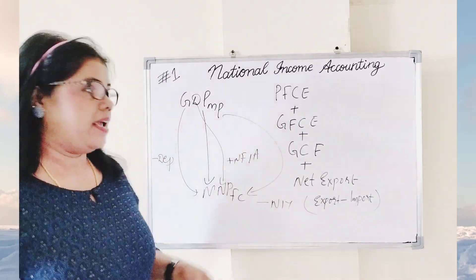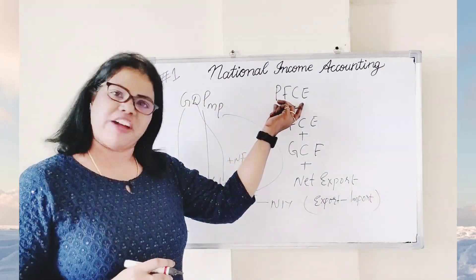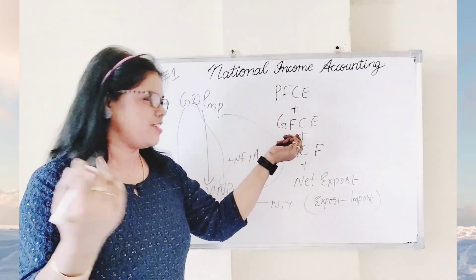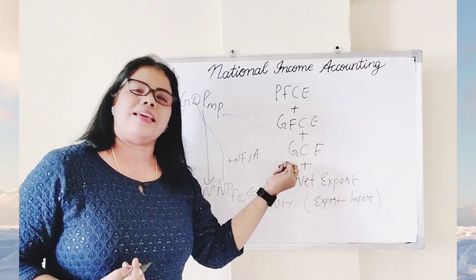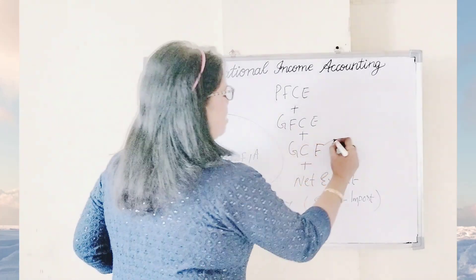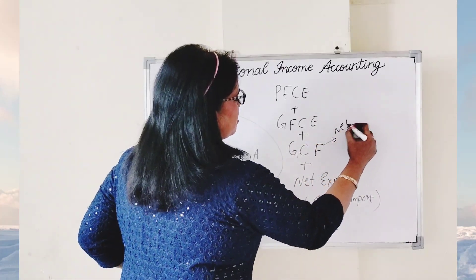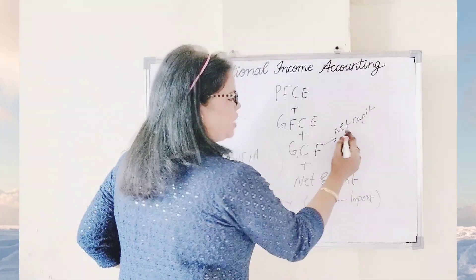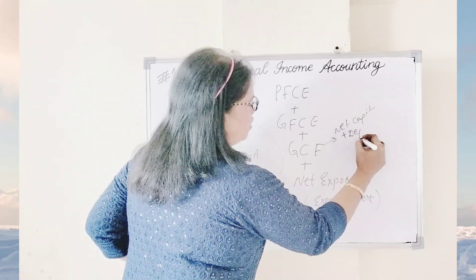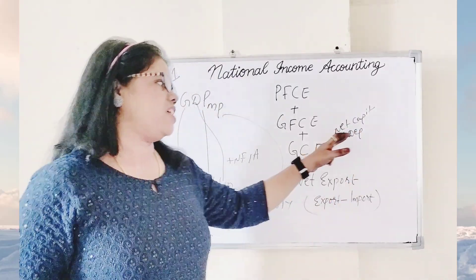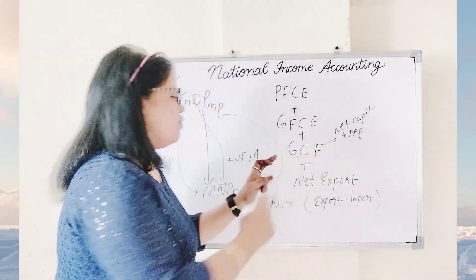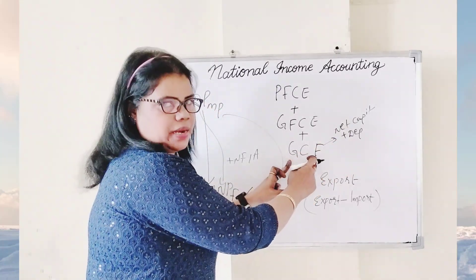Simply, you will get the value of private final consumption expenditure as it is, and government final consumption expenditure as it is. For gross capital formation, there may be different forms given — maybe net capital formation is given, so you have to convert net into gross by adding depreciation. If net capital formation is given in the examination, add the value of depreciation to get gross capital formation.